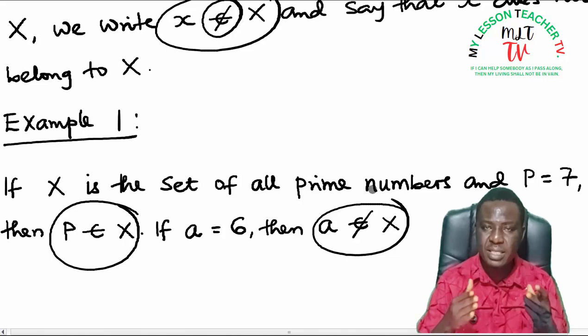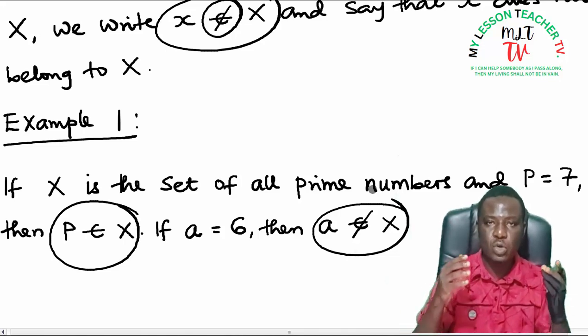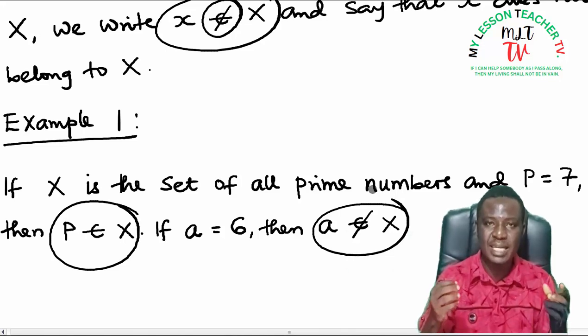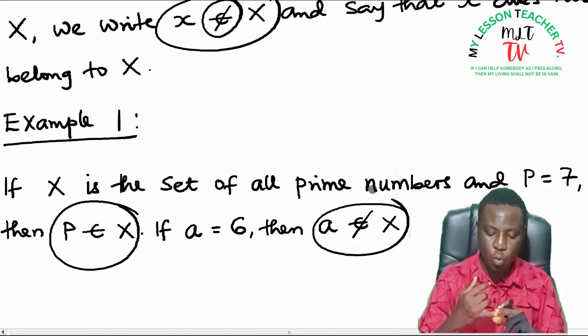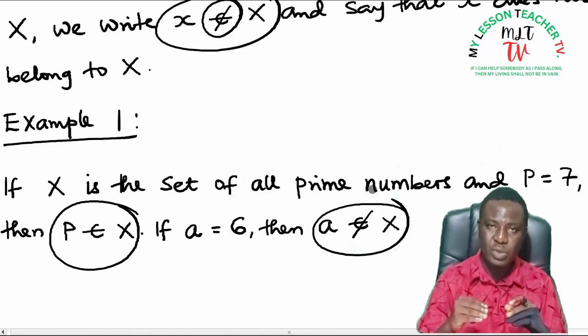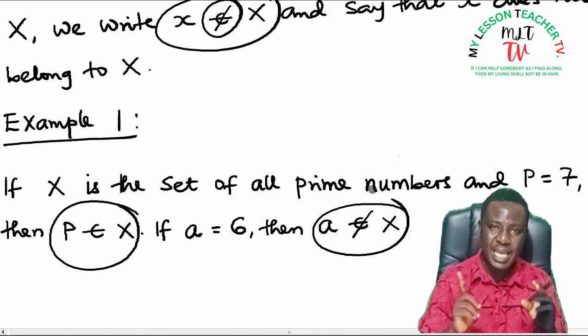While 6 is said not to be a prime number because 6 has more than two factors that can divide 6 without remainder. We have numbers like 1, 2, 3 and 6 itself. So this is the reason why we say 6 is not an element of prime numbers. Just like that opponent or that team player that plays against his members.